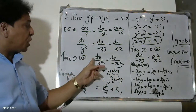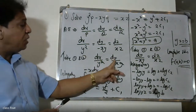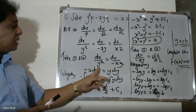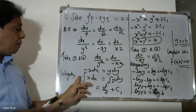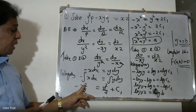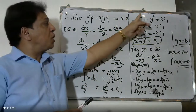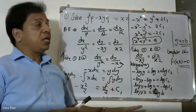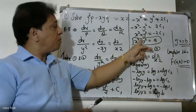Taking the first ratio and second ratio: dx by y² equals dy by minus xy. The y terms cancel, giving dx by y equals dy by minus x. Separating variables and integrating: minus x² equals y² plus 2c1, therefore x² plus y² equals a.